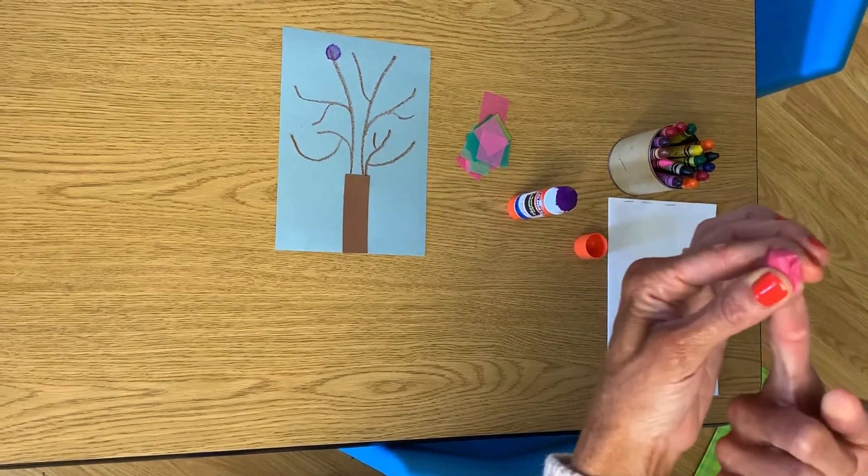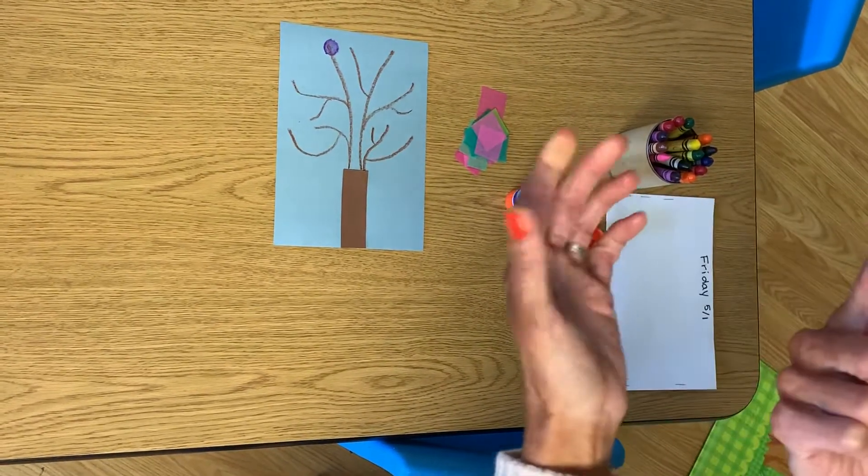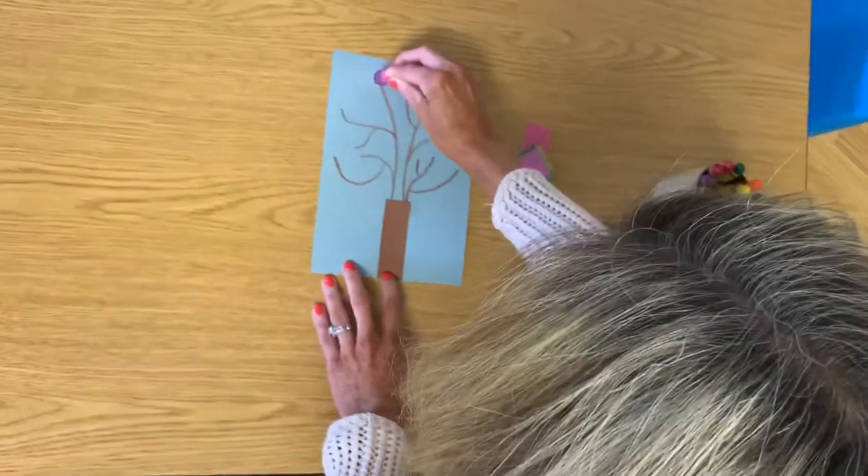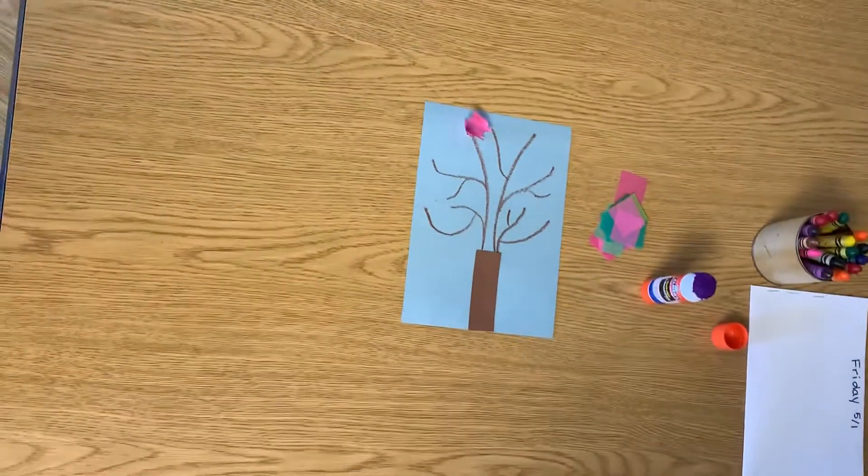I'm not squishing the tissue paper into a ball. I'm wrapping it around the tip of my finger. Then I'm going to go to where that glue dot is, and I'm just going to stick it right there.